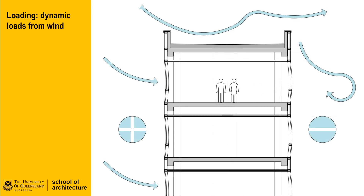Though the main structure takes most of the live and dead loads imposed on a building, the secondary systems such as the facade are affected by external loads that need to be taken into account. Primary to these are the live loads imposed on a building due to the effect of wind. High wind conditions can cause different problems around a building, with the direct force of the wind tending to push on a facade, whereas on the other side of a building, or the lee side,